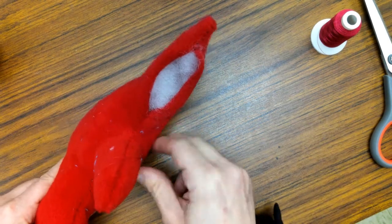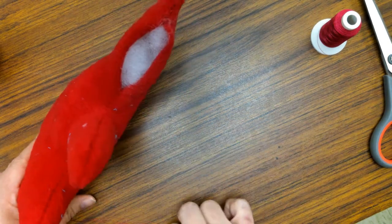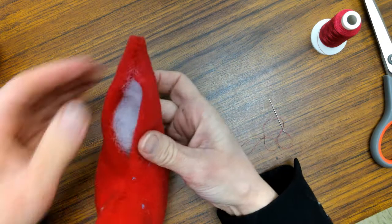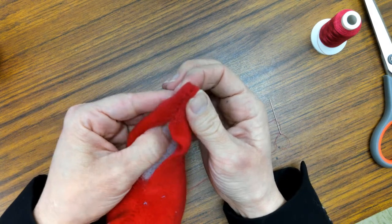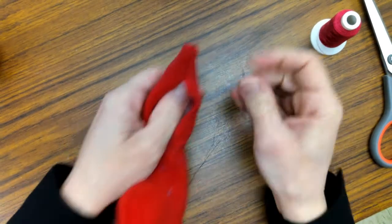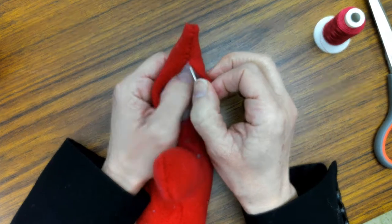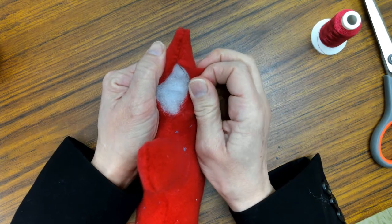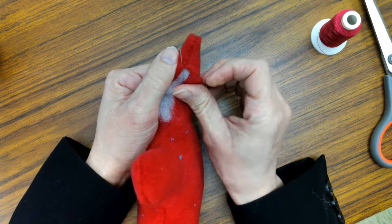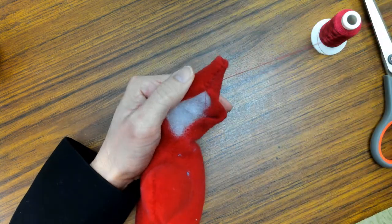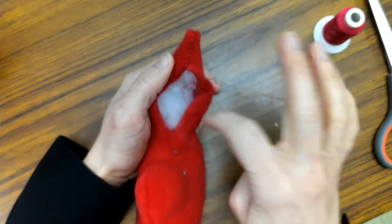So first of all, we're going to use the ladder stitch, and here we go. We're going to go to the hole, and the first step to the ladder stitch is I need to come up from underneath. So it looks like my needle is poking in, and I want my ugly knot inside of the hole.